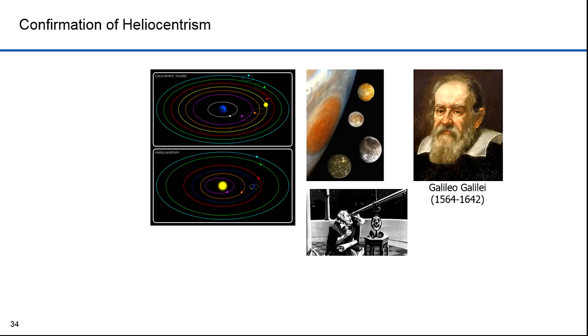His observations of the satellites of Jupiter created a revolution in astronomy. A planet with smaller planets orbiting it did not conform to the principles of Aristotelian cosmology, which held that all heavenly bodies should circle the Earth. Many astronomers and philosophers initially refused to believe Galileo could have discovered such a thing.